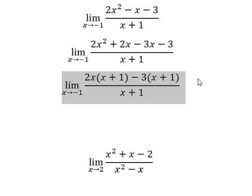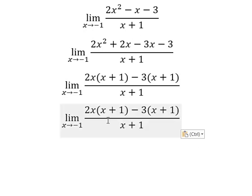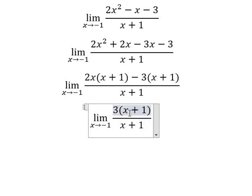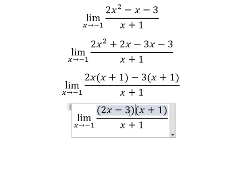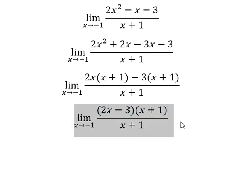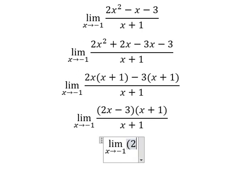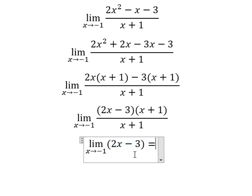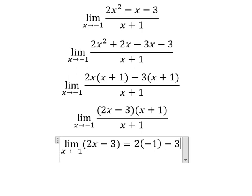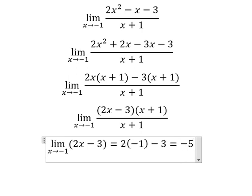Now we can do factorization by x plus 1. Now we can simplify x plus 1 on numerator and denominator. And now we can put negative 1 here and we have negative 5.